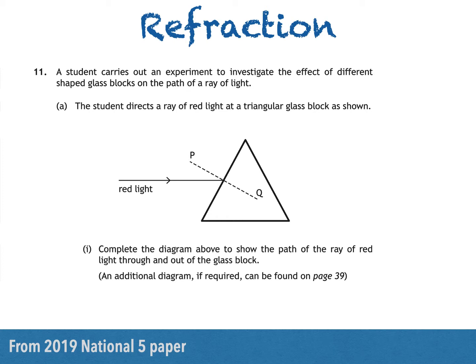The student directs a ray of red light at a triangular glass block as shown. Part 1 then asks us to complete the diagram above to show the path of the ray of red light through and out of the glass block. You'll also see that if we mess up our diagram we get a chance to draw it again on another page in the exam booklet.